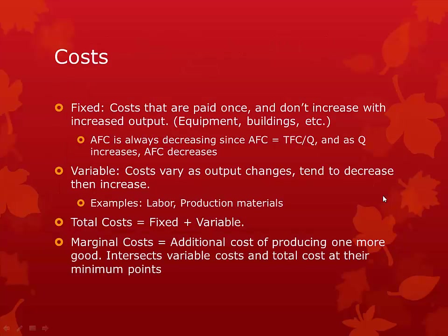There are a few different types of costs. Fixed costs are costs that are just paid once and don't increase with increased output. These are stuff like machinery, buildings — things you need to start a business but don't need to worry about once you have them. Usually expensive, but as you produce more, the total fixed cost is spread among more goods. This leads to an average fixed cost that's always decreasing, because average fixed cost is just total fixed cost divided by quantity, and as quantity increases, average fixed cost decreases.